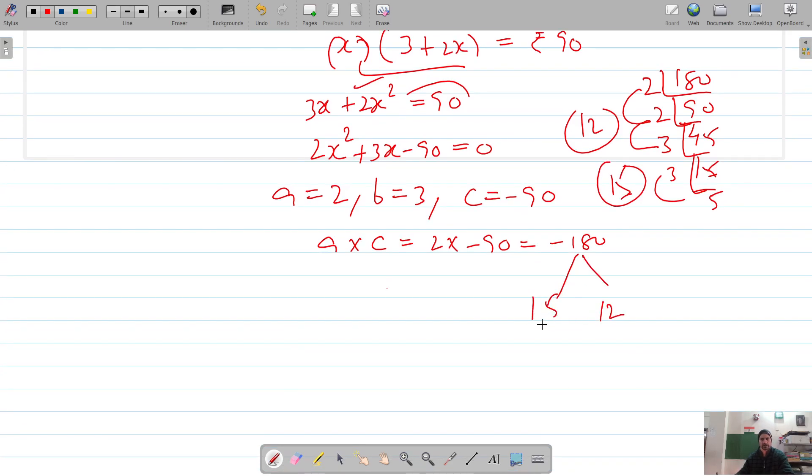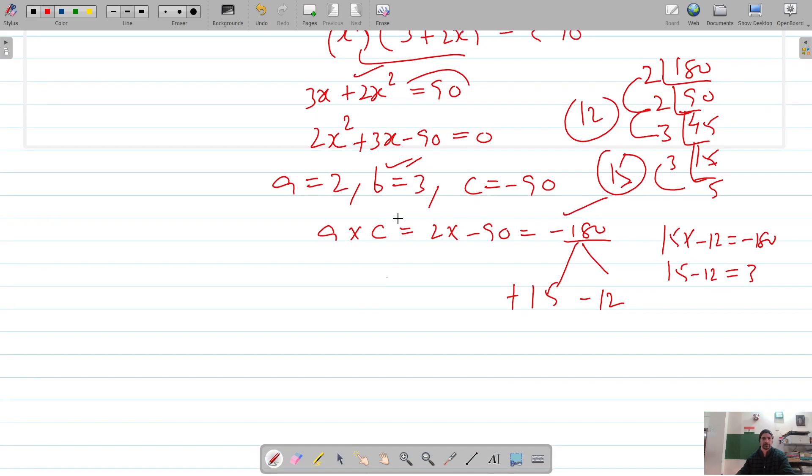15 and 12 are the factors, and because we need plus 3, so it's plus 15 and negative 12. 15 times negative 12 is negative 180, that's the product we need, and 15 minus 12 is 3, that's the middle term we need.